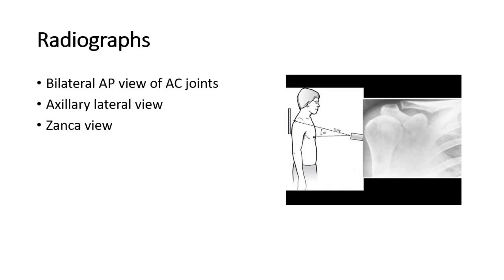We should do shoulder radiographs to evaluate the patient's condition. The recommended views are the AP view, lateral view, and Zanca view. This picture shows how to take a Zanca view of the shoulder.